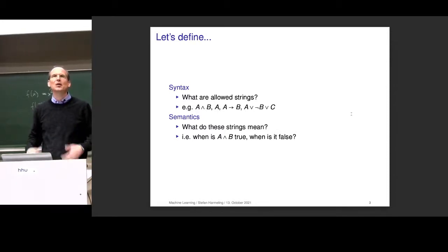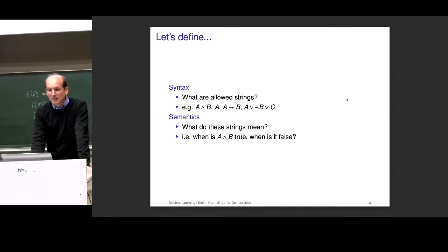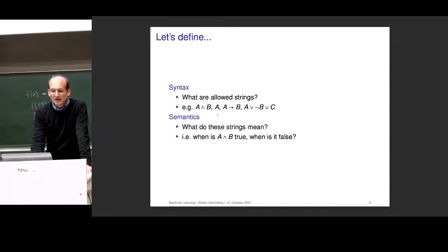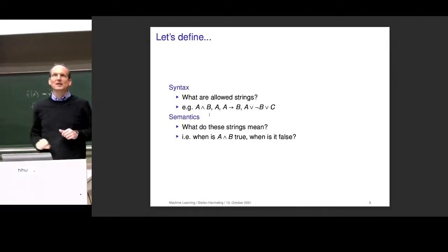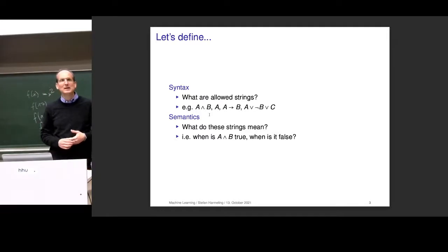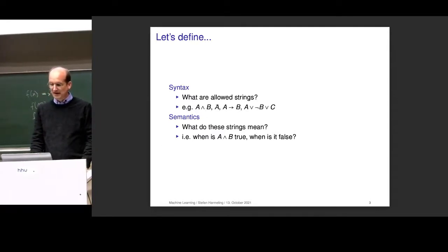Syntax and semantics is something you typically learn in a logic class. Syntax is all about defining valid strings — what strings are we allowed to write down when we want to write down formulas. Those are example strings: 'a', and then there's a sign we read as 'and', or others — these are all valid strings. This is defining a language, which is nothing more than a subset of all possible strings. The semantic part is what do these strings mean — each string can be mapped to a truth value, true or false.